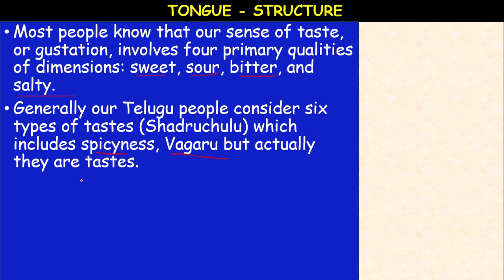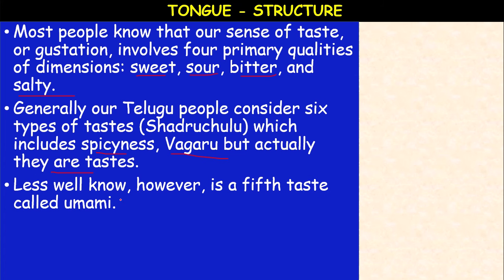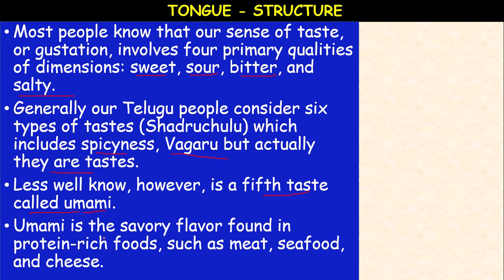Actually spiciness is not a taste — it is an irritation. Less well-known, however, is a fifth taste called Umami. Umami is a savory flavor found in protein-rich foods such as meat, seafood, and cheese. This Umami flavor is present in animal foods.